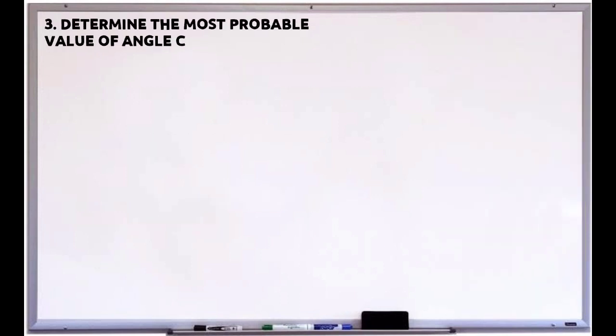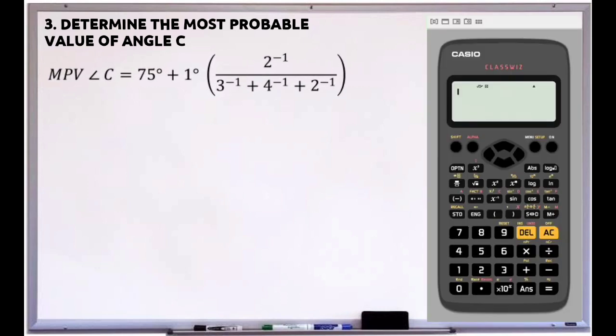The third question is: determine the most probable value of angle C. The most probable value of angle C equals 75 degrees 27 minutes 41.54 seconds.